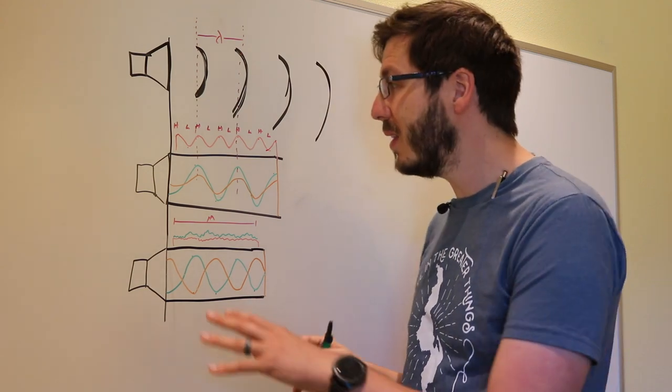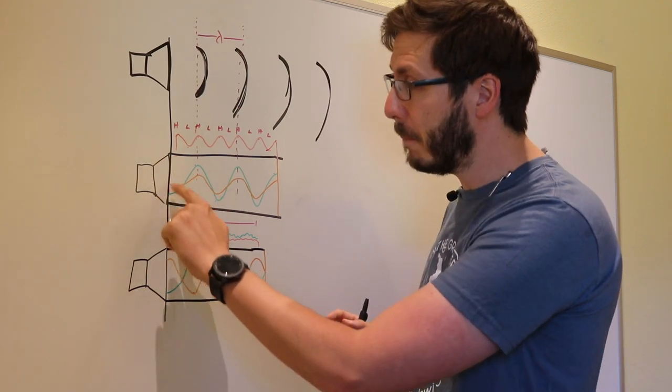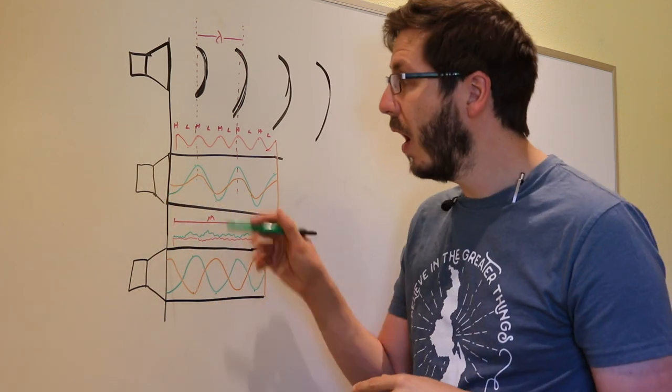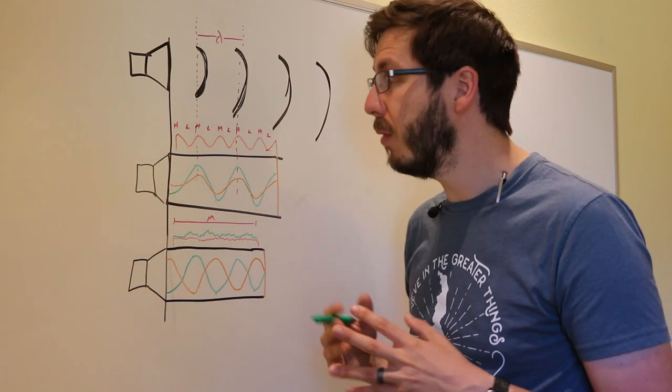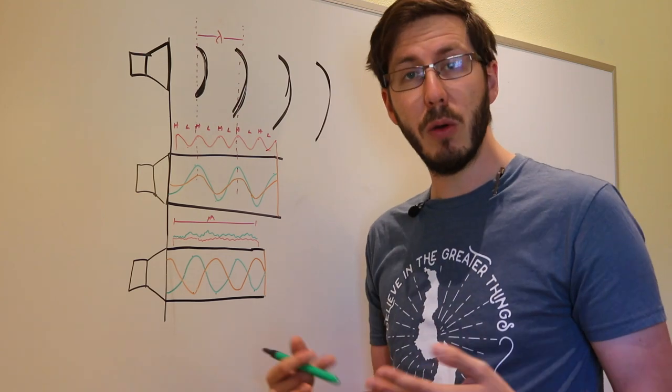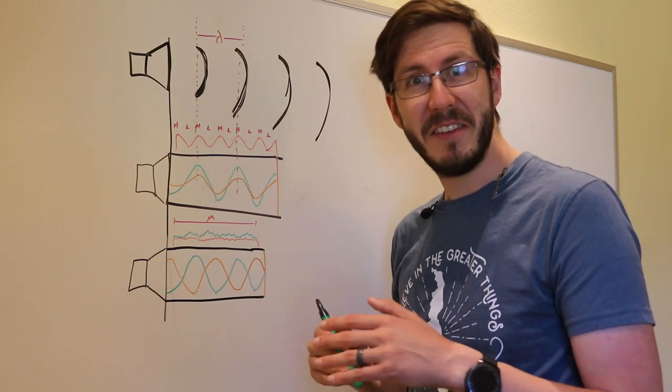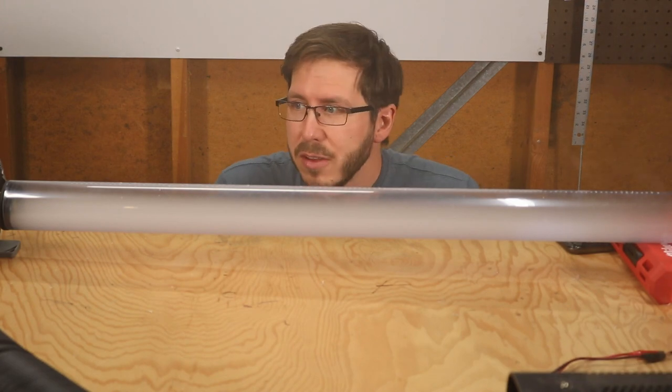But let's look at our actual fog Rubens tube to see if we can see these points of compression and rarefaction where there's high pressure compression and rarefaction where there's middle or low pressure. Let's take it to the tube.